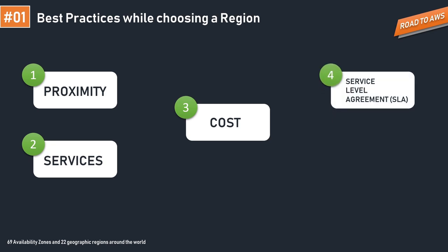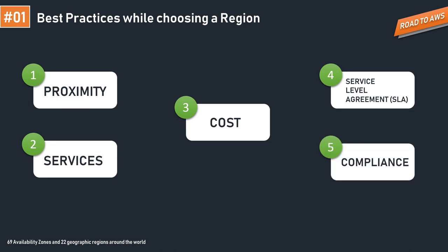The fourth point is Service Level Agreements (SLAs), which vary by region just like cost, so ensure your needs are being met. The fifth is compliance, which is one of the most important aspects of product development. Some features may not be accepted in certain regions due to regulatory requirements, so you need to meet compliance guidelines by hosting your deployment in specific or multiple regions. As a solutions architect, remember all five points.